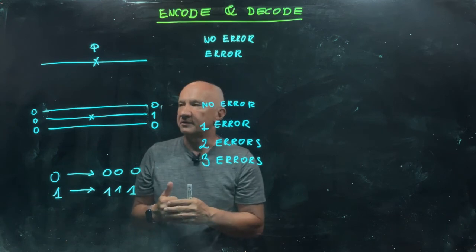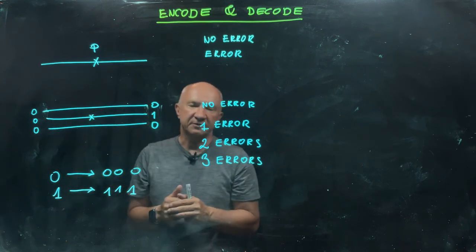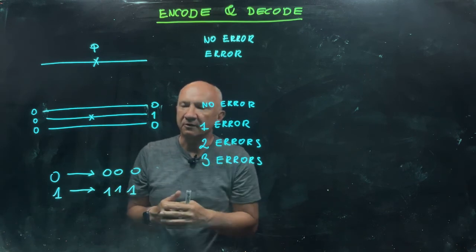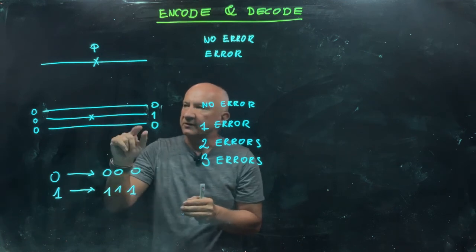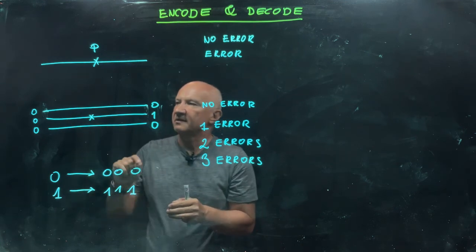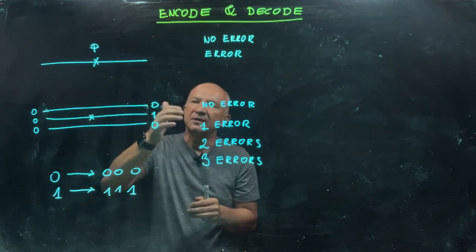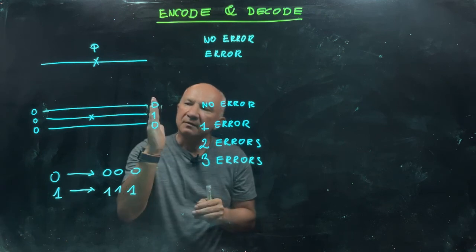Now, each bit when transmitted through the channel has the same probability p to go wrong, so it can be flipped with probability p. For example, in this diagram here, the second bit was flipped, so zero-zero-zero emerges as zero-one-zero on the other side.